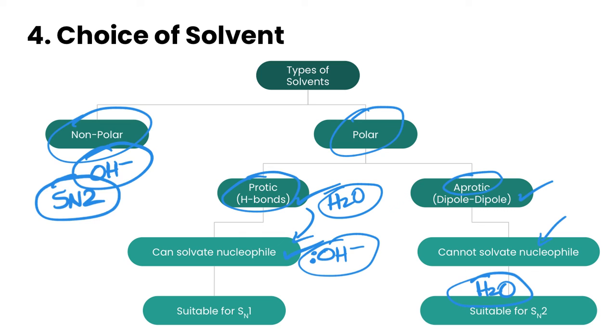Okay, so those are our four factors that affect the rate of nucleophilic substitution reactions. That's it for this video. We'll see you in the next one.